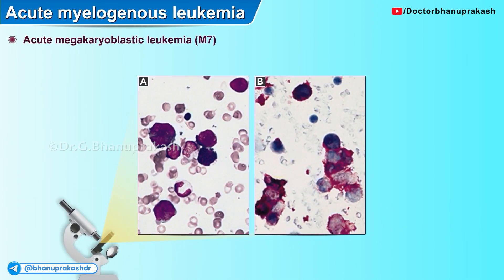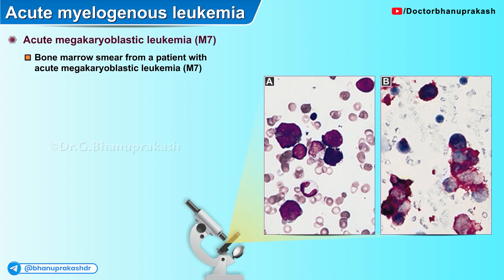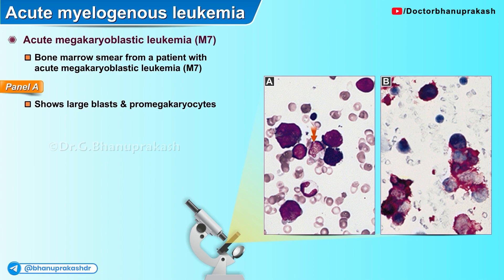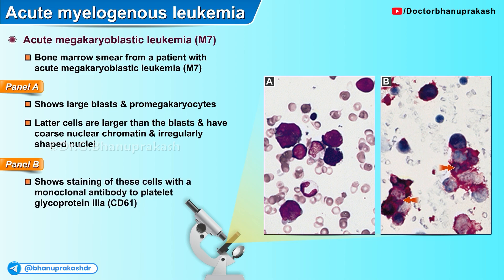Here is another histopathological image showing a bone marrow smear from a patient with acute megakaryoblastic leukemia. Panel A shows large blast cells and pro-megakaryocytes, where the latter cells are larger than the blasts and have coarse nuclear chromatin and irregularly shaped nuclei. Panel B shows staining of these cells with a monoclonal antibody to the platelet glycoprotein 3A.